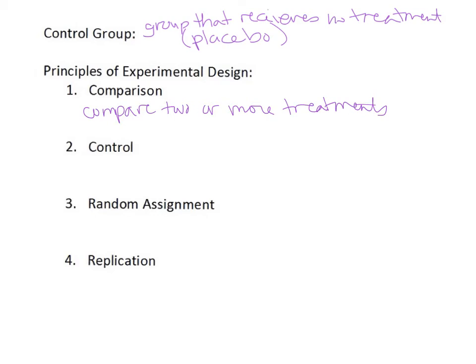The second principle is control, which is different from a control group. Control means we try to control other variables. For example, with a heart attack medication study involving males and females, you want the same number of males and females in each group — otherwise gender becomes a confounding variable. We try to make all variables the same across all groups.